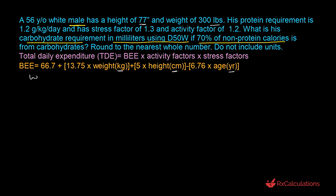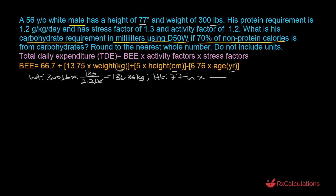Converting weight: 300 pounds ÷ 2.2 = 136.36 kilograms. Converting height: 77 inches × 2.54 cm/inch = 195.58 centimeters. Now we have weight in kilograms and height in centimeters, consistent with the BEE equation.